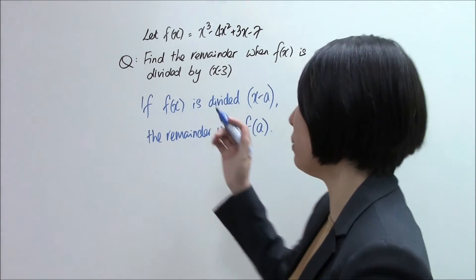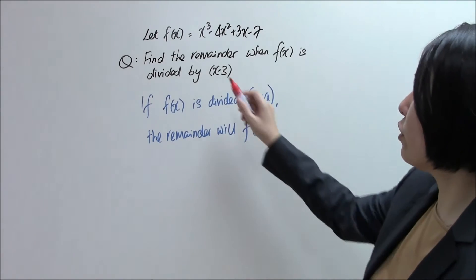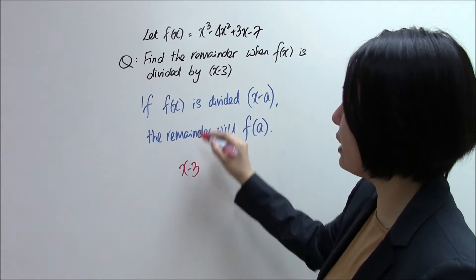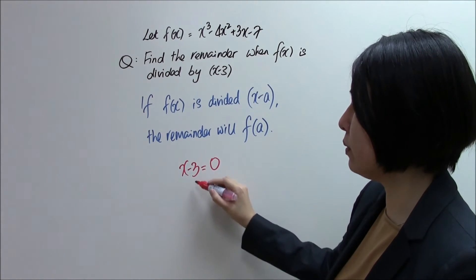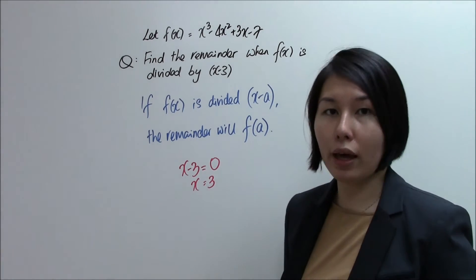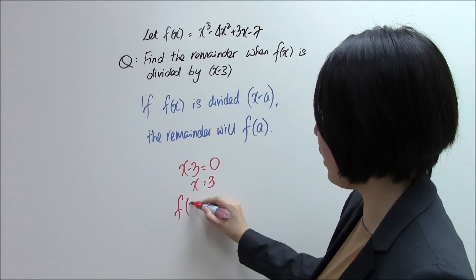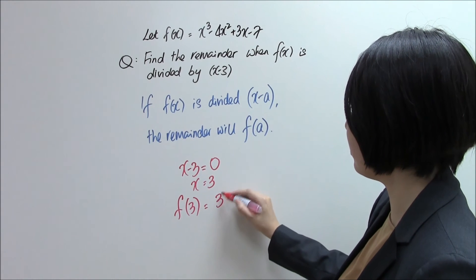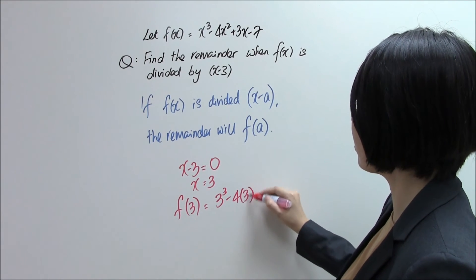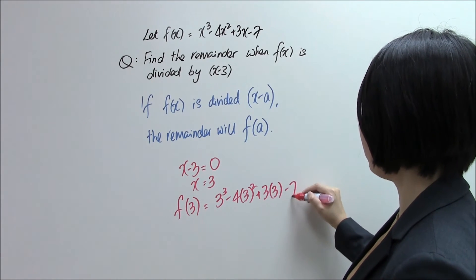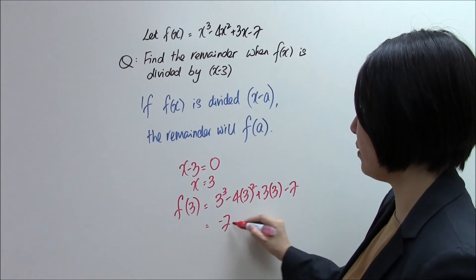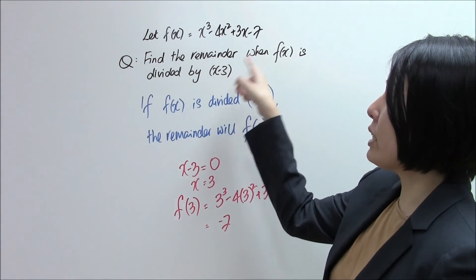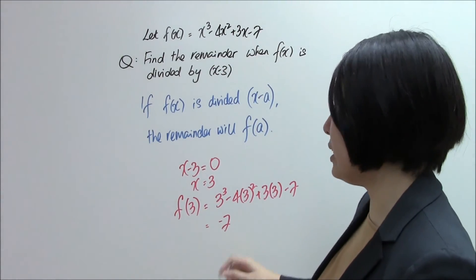So let us see how we apply this on the question here. We need to find the remainder when f(x) is divided by x minus 3. Take the divisor x minus 3, set it equal to 0, so that you can get a value of x to substitute into your f(x). Now that we have gotten the value of x to be 3, we substitute x equals 3 into our f(x) and press our calculator. We end up with negative 7. So when f(x) is divided by x minus 3, our remainder is minus 7.